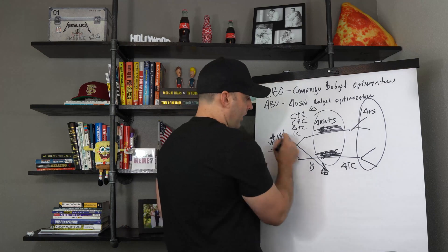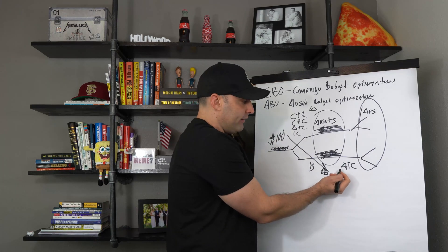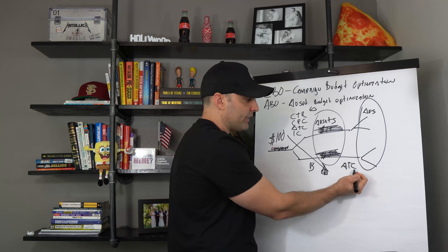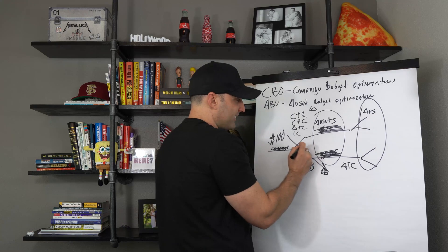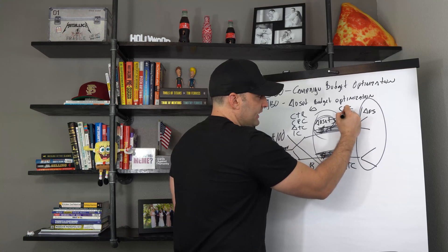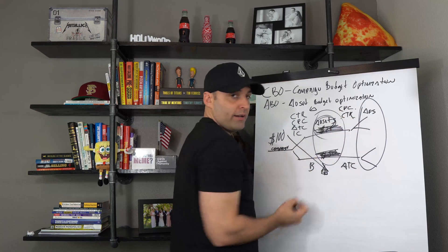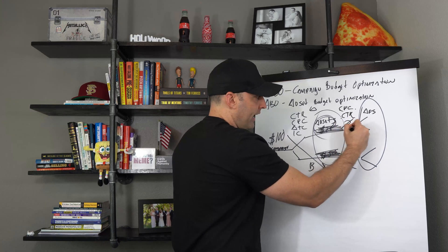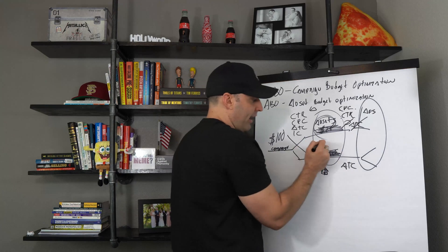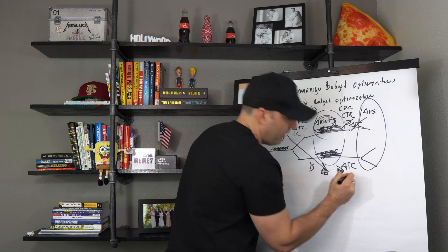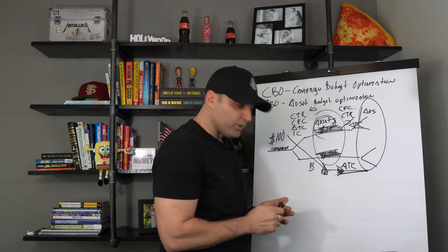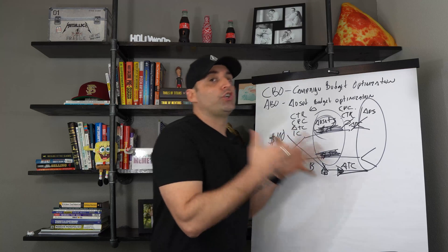Ideally that's how it should work, though it doesn't always. If one ad set has a low CPC and good CTR but zero add-to-carts, Facebook will push budget toward the other ad set getting more ATCs — because people who don't add to cart are not likely to buy. Facebook shifts budget to where it's most likely to get conversions and purchases.